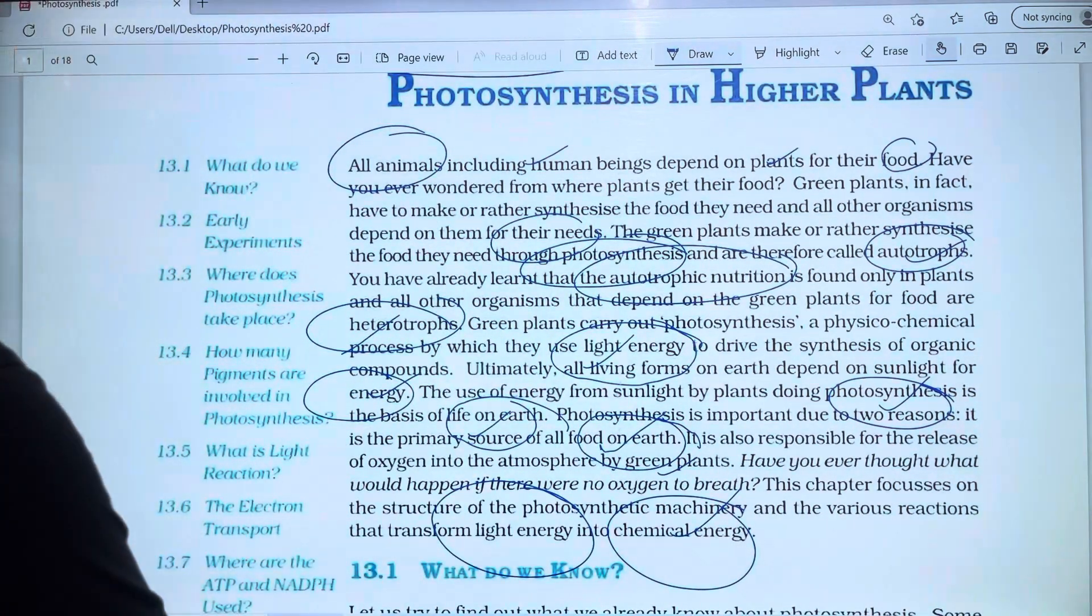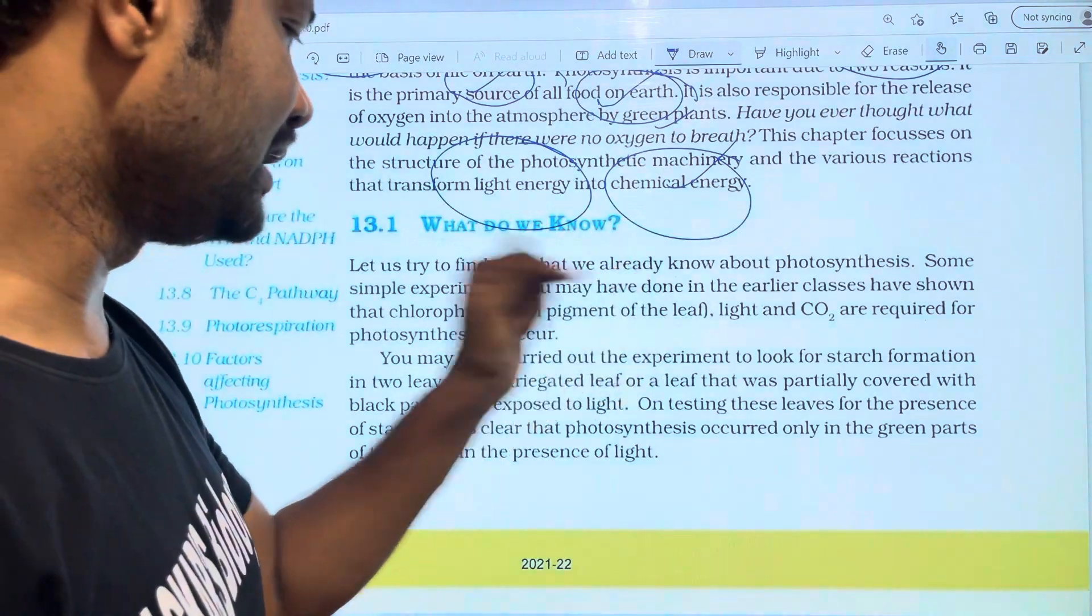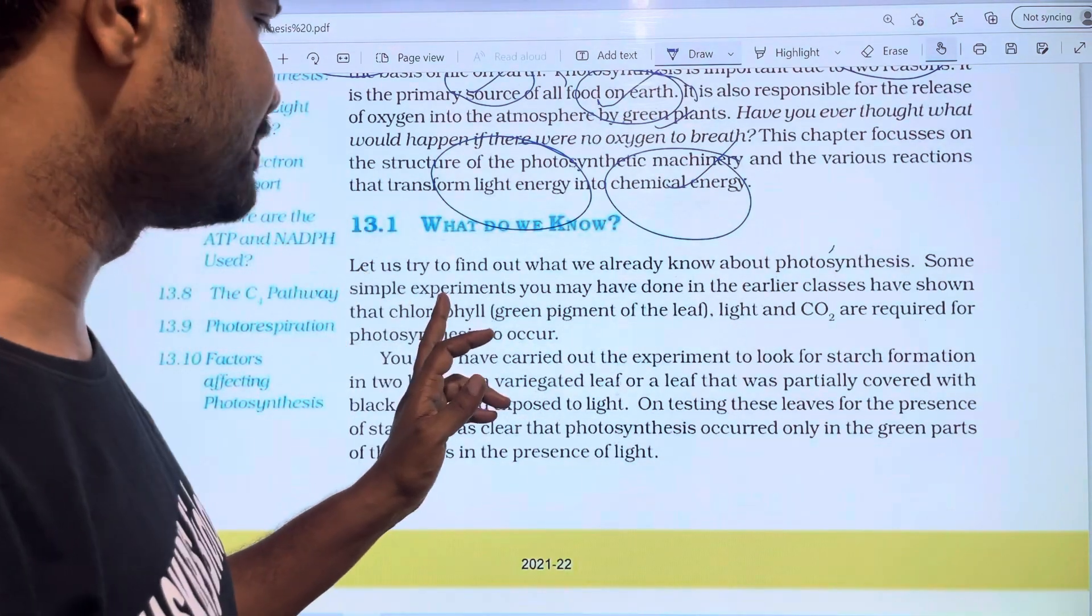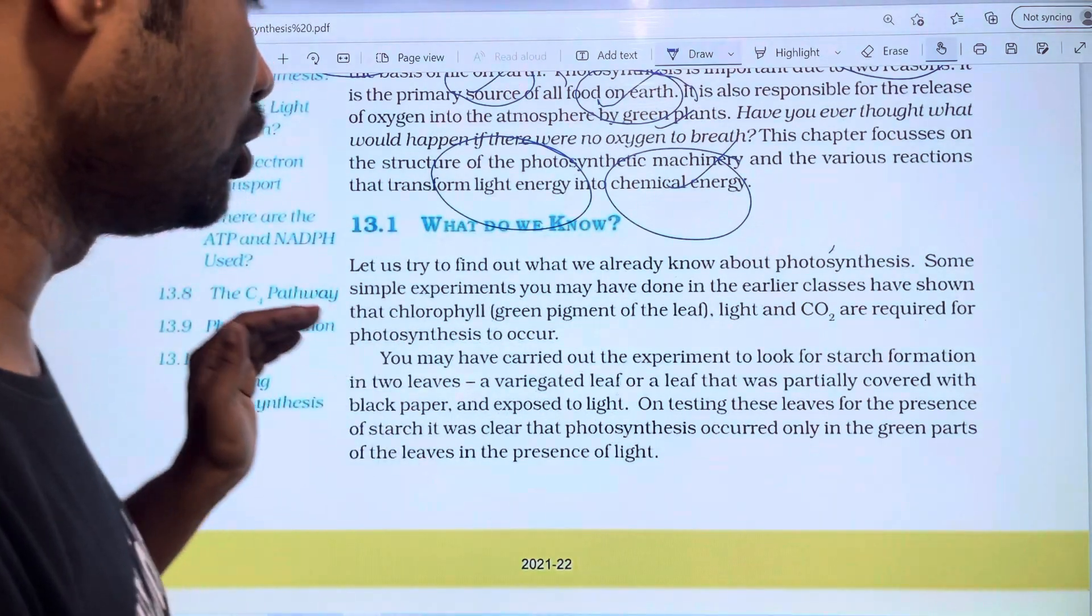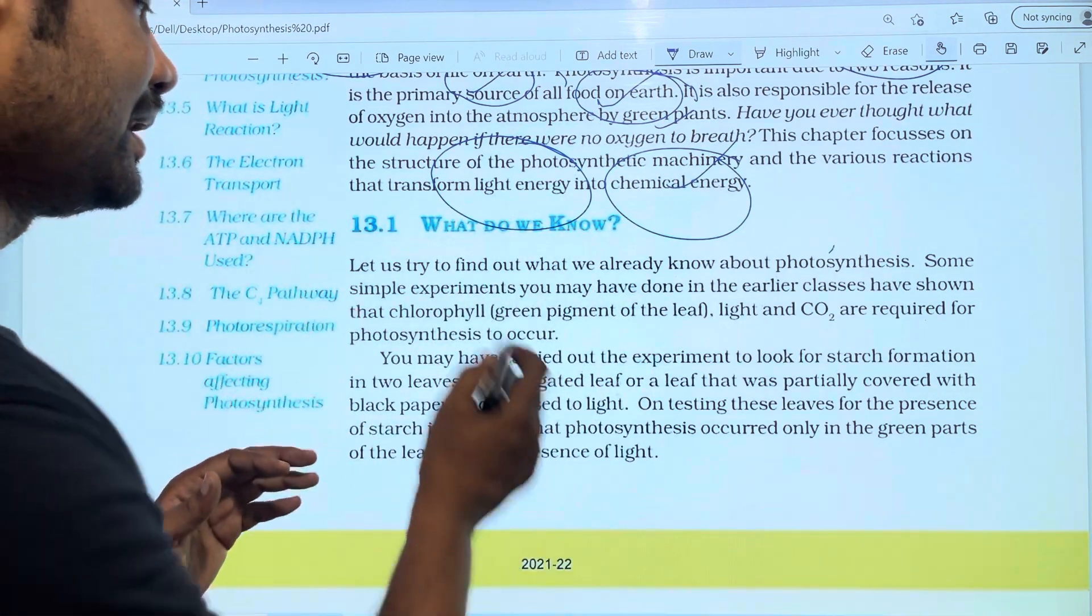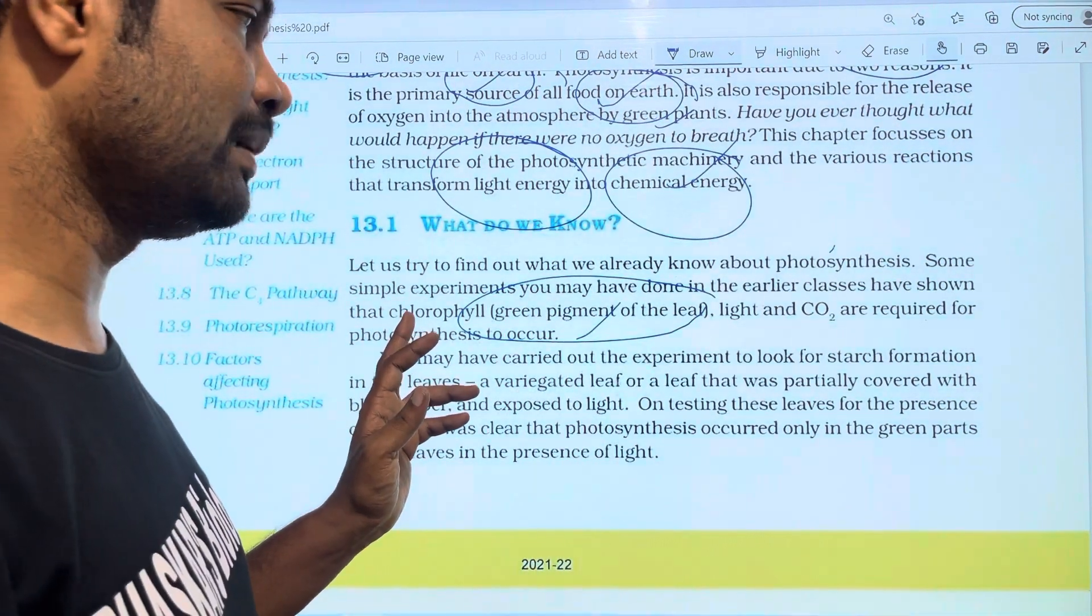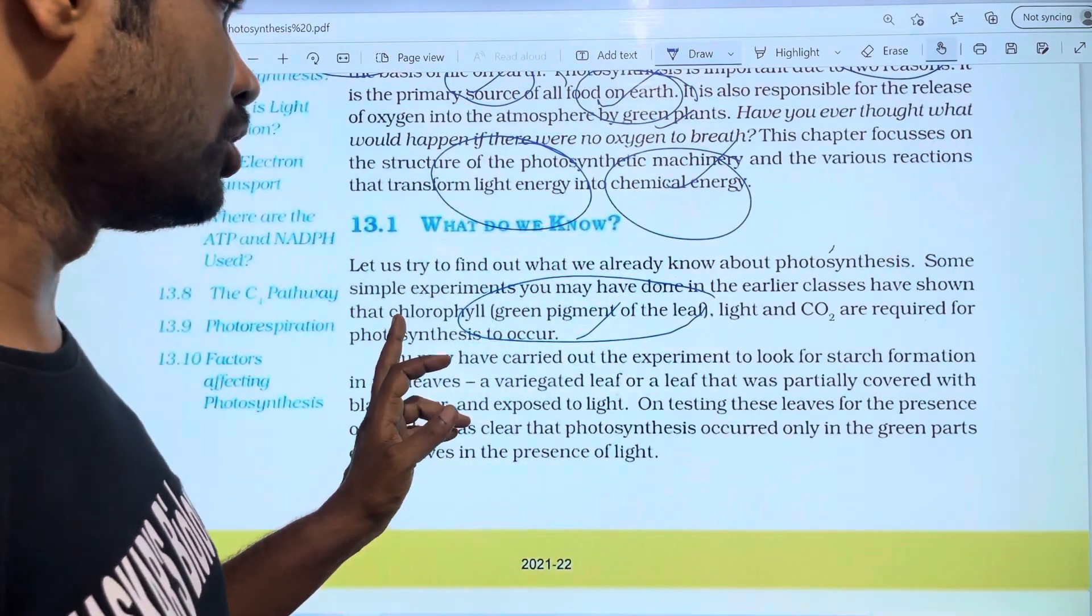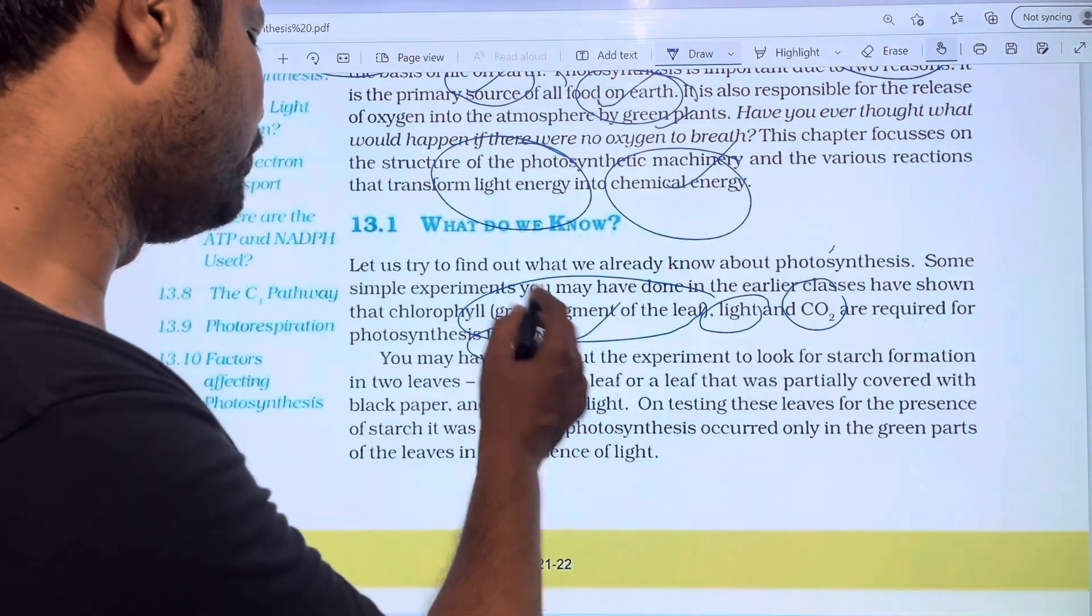Let us try to find out what we already know about photosynthesis. Some simple experiments you may have done in earlier classes show that chlorophyll is the green pigment of the leaf, and plants have pigments.